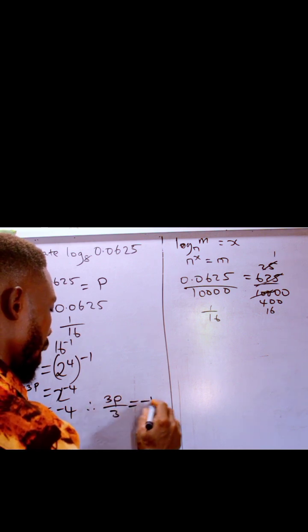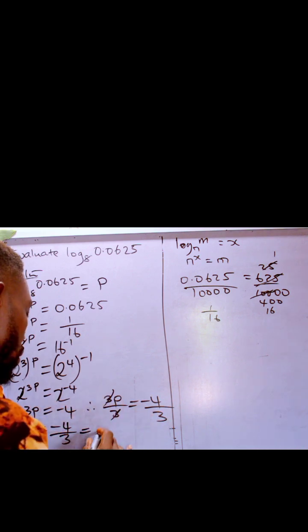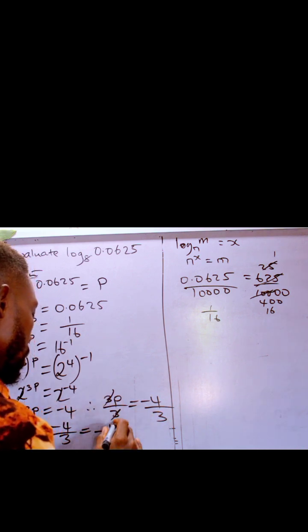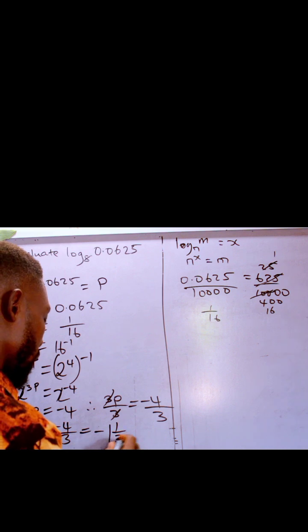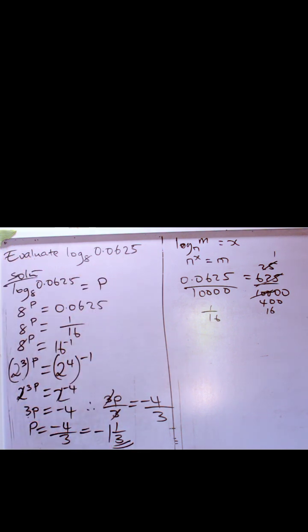P equals minus 4 over 3. As a mixed fraction, it is minus 1 whole number, 1 over 3. And that is the log of 0.0625 in base 8.